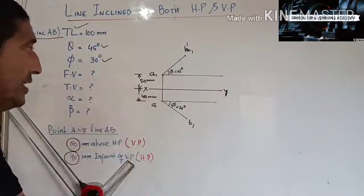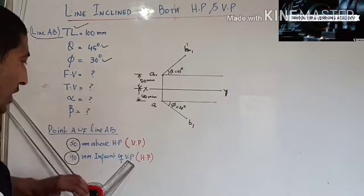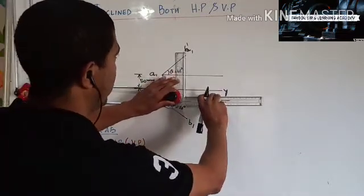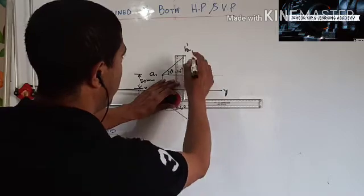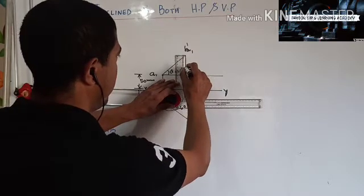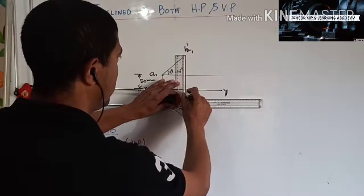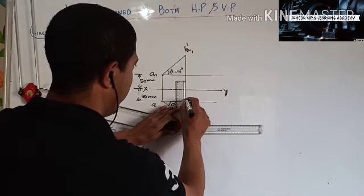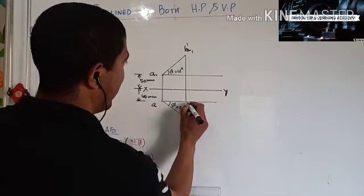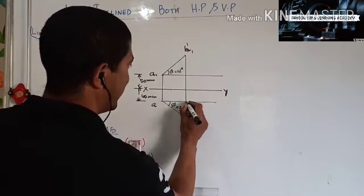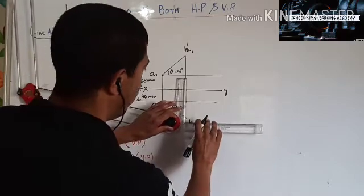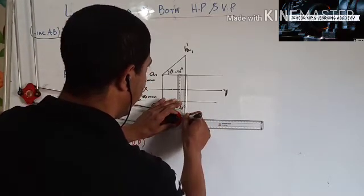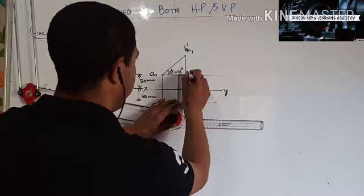Next I need to draw the projection line from B'1 up to the locus line of A'. That line has intersected here. Similarly I will draw the projection line from B'1 up to the locus line of A'.